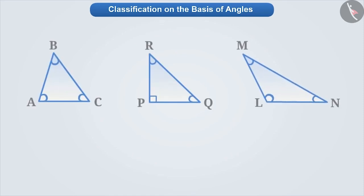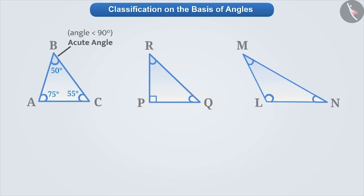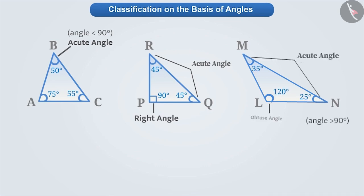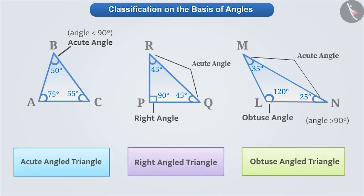Now, let's learn how to classify triangles on the basis of angles. Here, three triangles are given. Can you find any difference by looking at their angles? If we look at triangle ABC, then all its angles are acute angles. If we look at triangle PQR, then it has two acute angles but one right angle. Similarly, in triangle LMN, we can see that there are two acute angles but one obtuse angle. With this understanding, we can classify the triangles in the following ways.